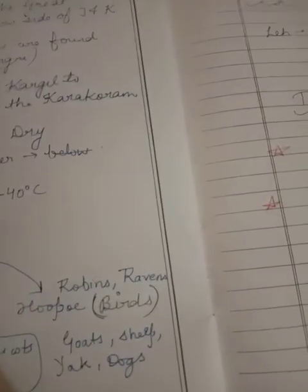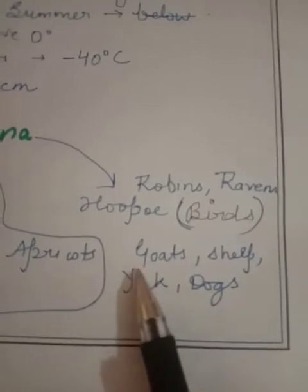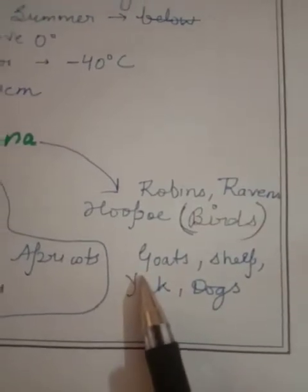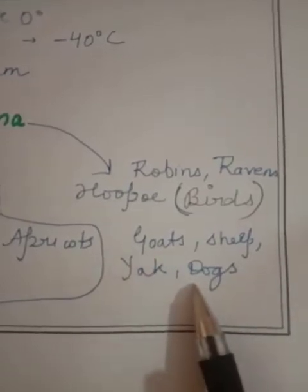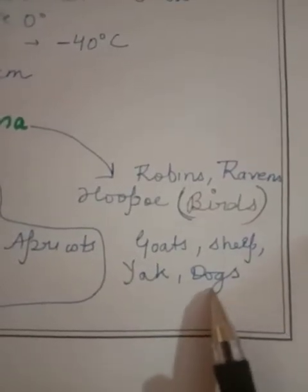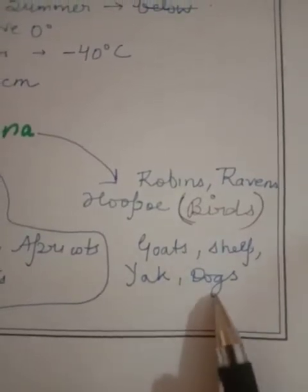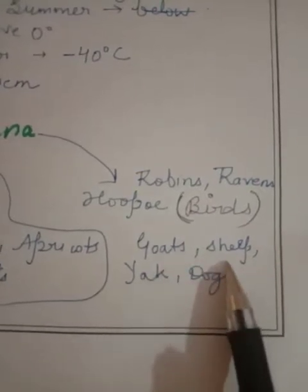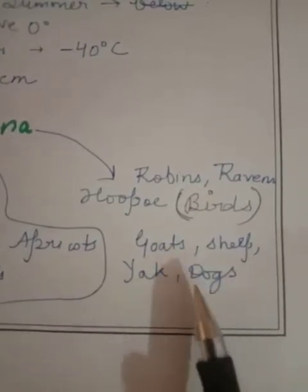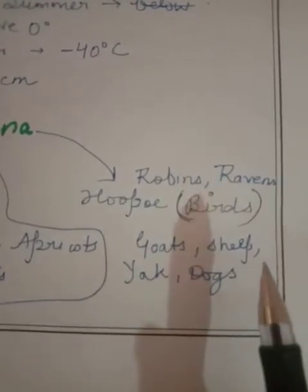People get milk from animals and also prepare meat, and use animal skins. Special kinds of dogs are found there. Yak milk is used to make cheese and butter. The hair of sheep and goats is used to make woolen clothes, as the temperature is extremely low in the Ladakh area.